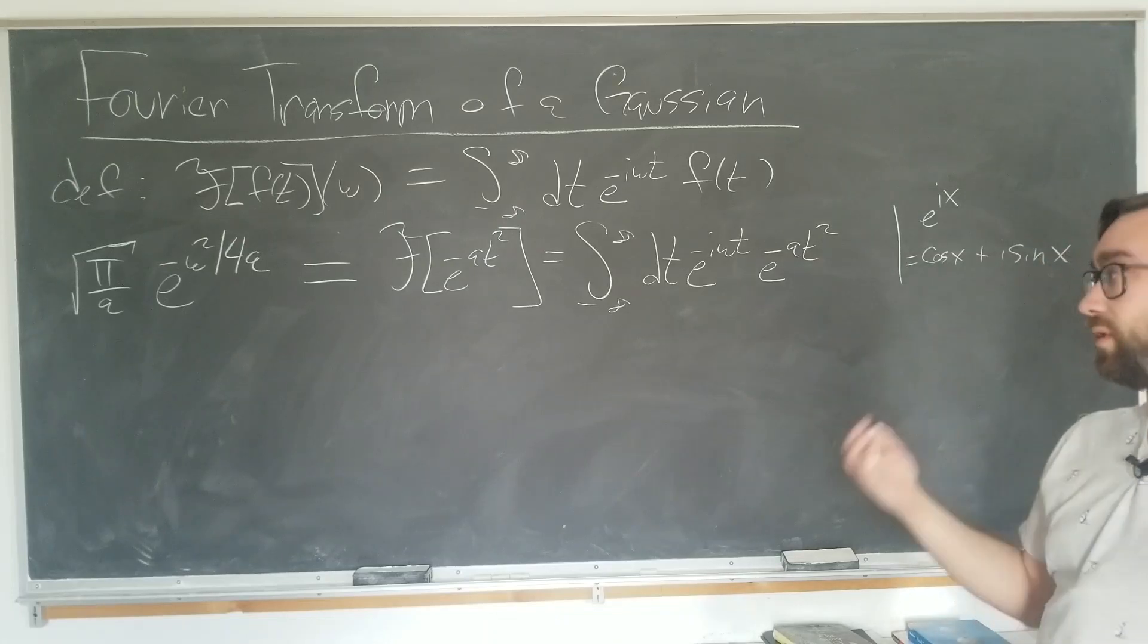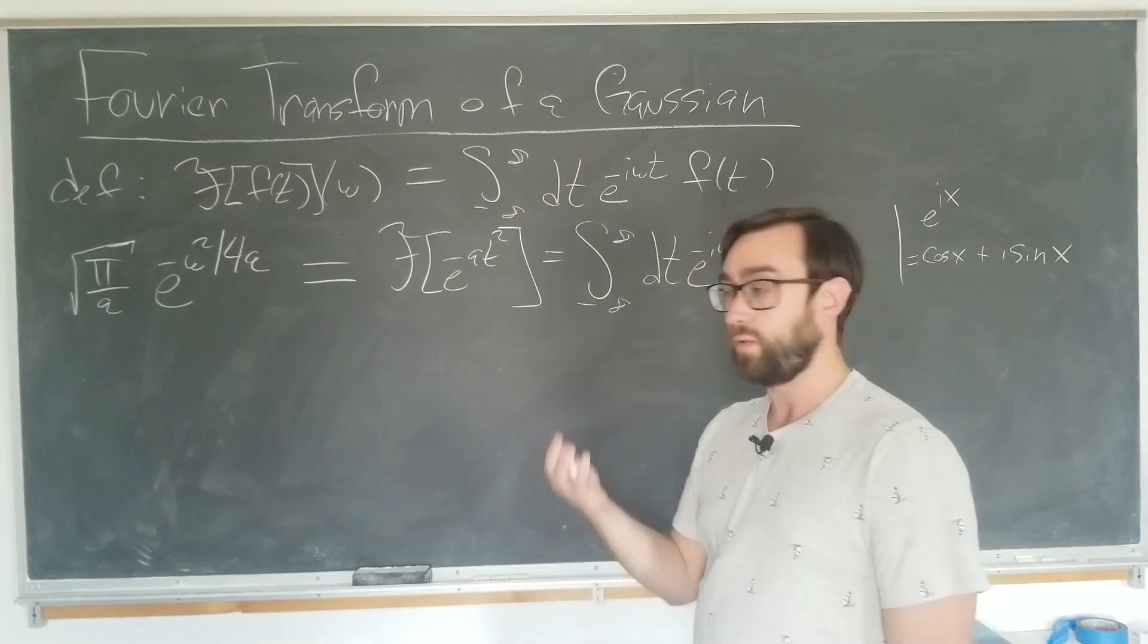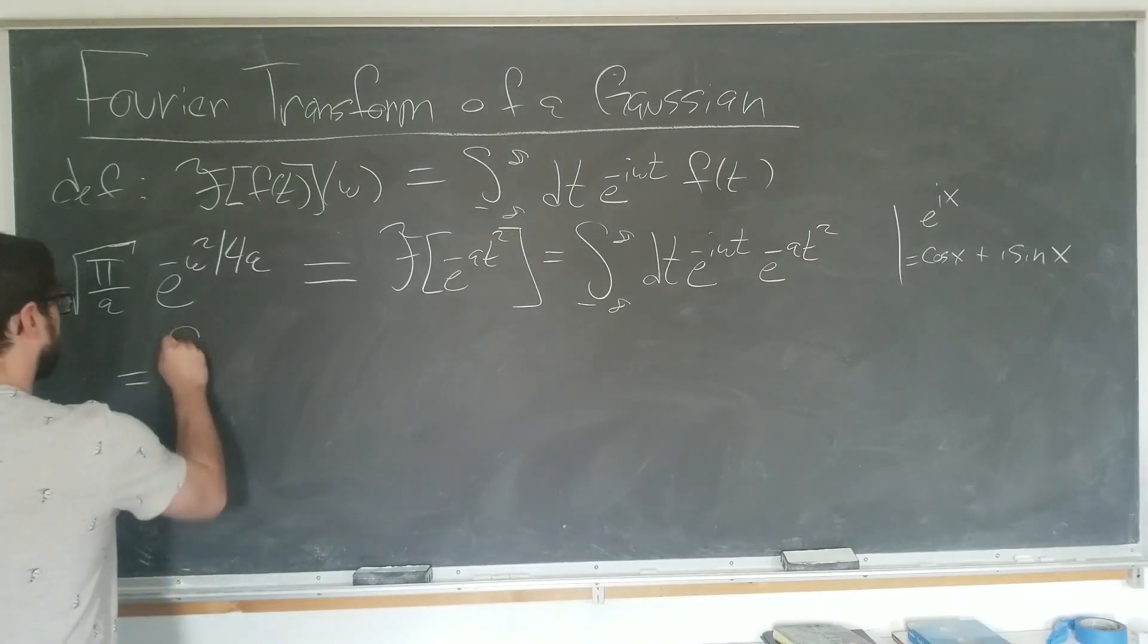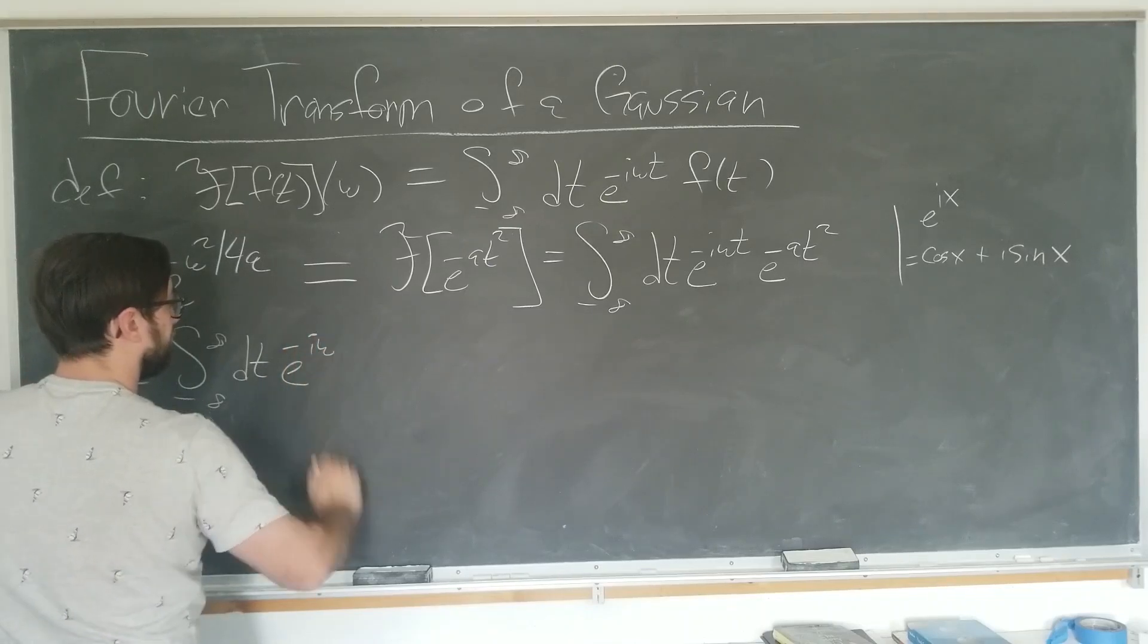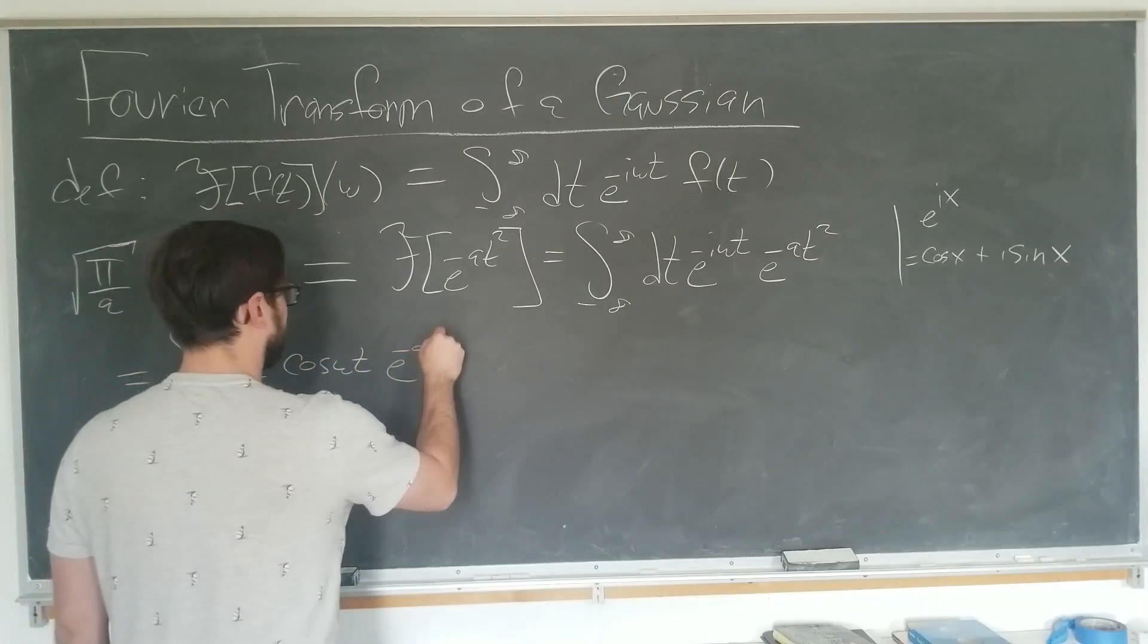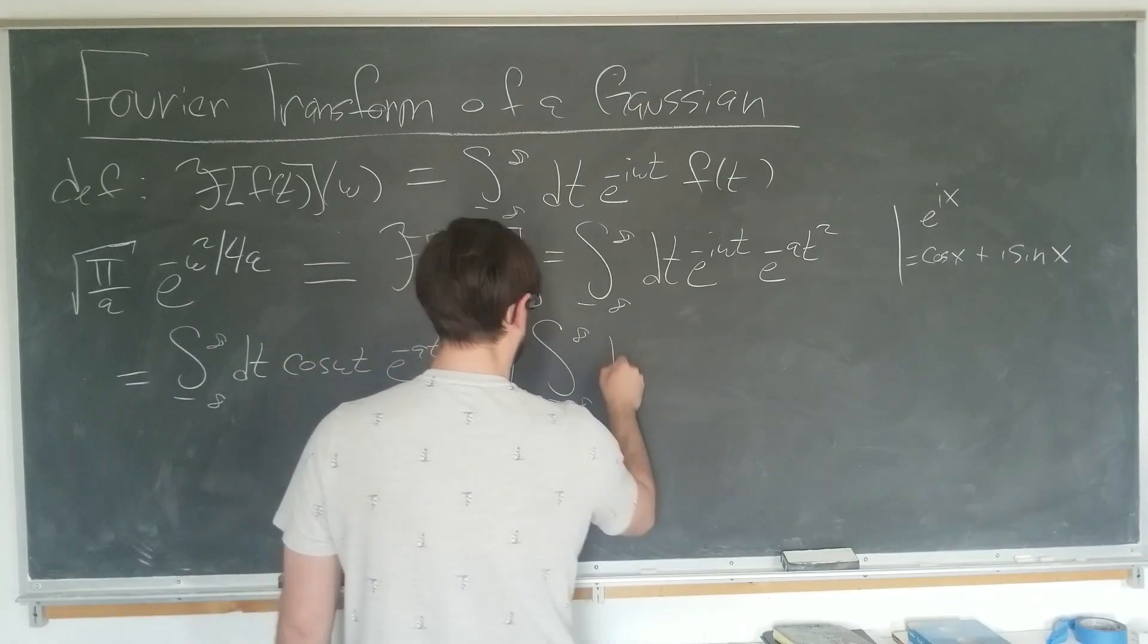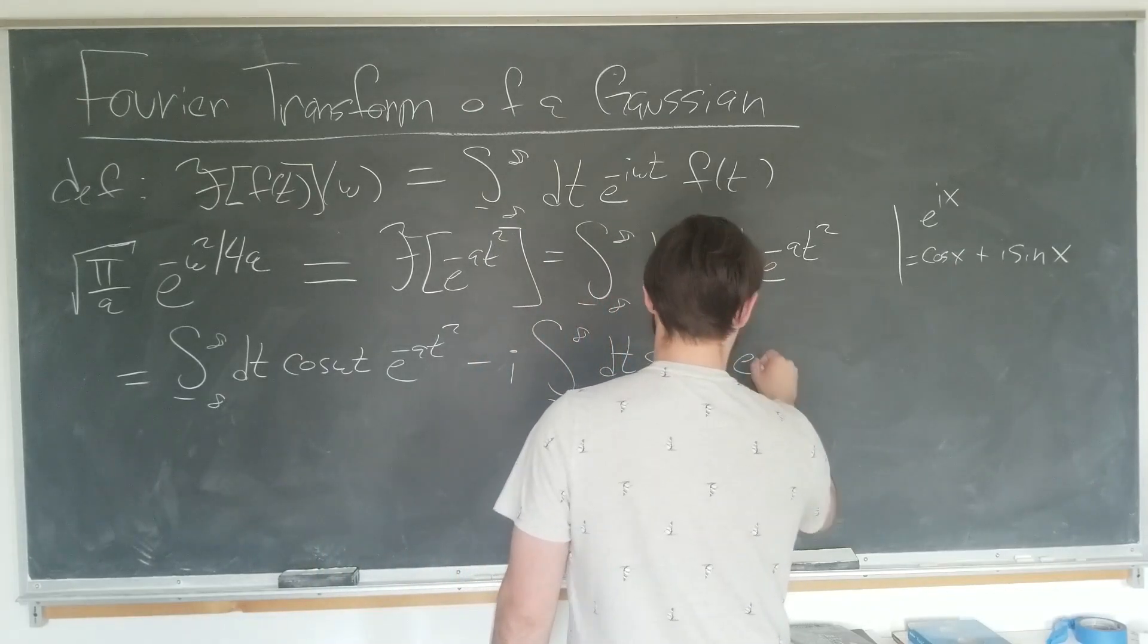And we'll see where that gets us. I think it'll get some more cool. Let's see. This is now integral minus infinity to infinity dt e to the minus i omega. The whole point is to expand this into cosine omega t e to the minus a t squared minus i times another integral over all space, this time with the sine times the Gaussian.